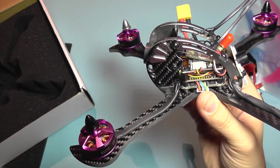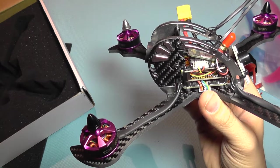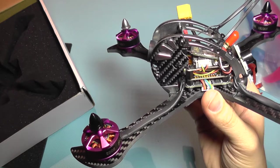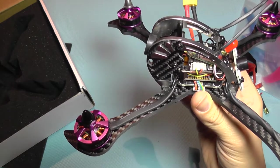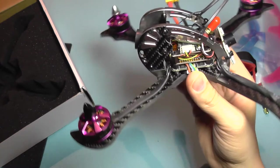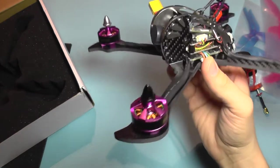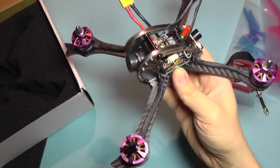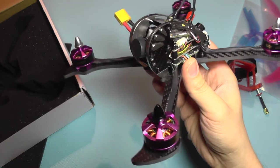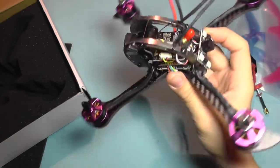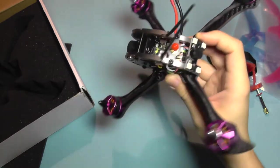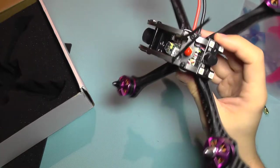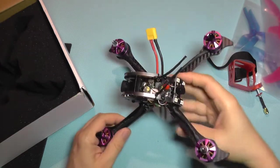The ESCs are BLHeli compatible, 30 amps and it should support shot. What is very interesting about this model is that it supports anything from 3 cell lipos up to 6 cell lipos. I don't know if the motors can go up to 6S but all the electronics on it are 6S compatible.